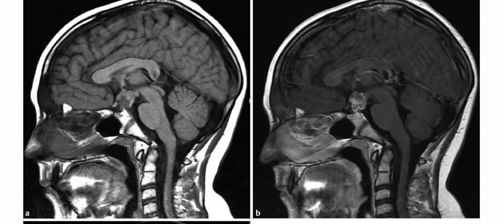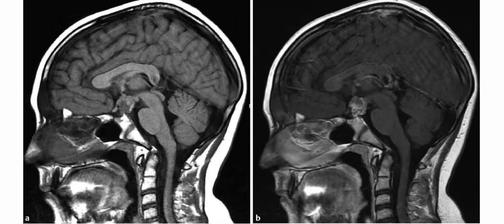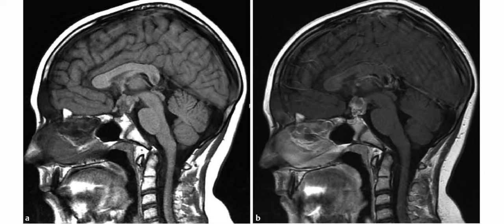Other differentials to add for this suprasellar mass in a child include germ cell tumor, Rathke's cleft cyst, optic nerve or hypothalamic glioma, and hypothalamic hamartoma.